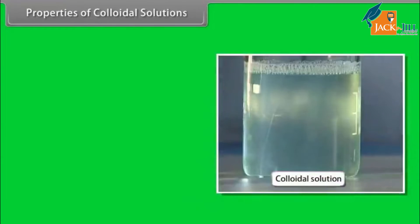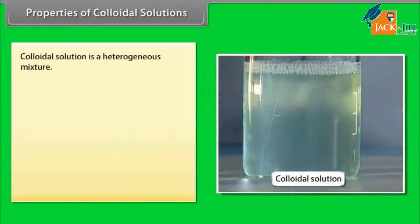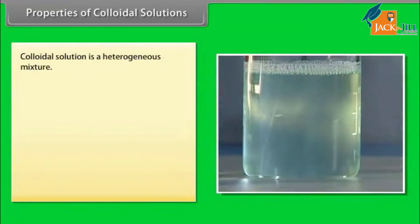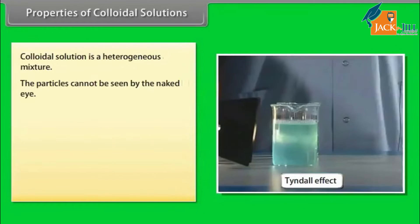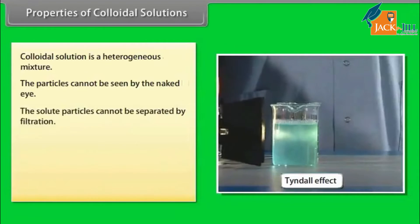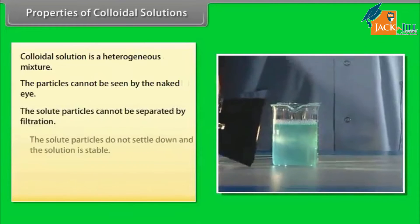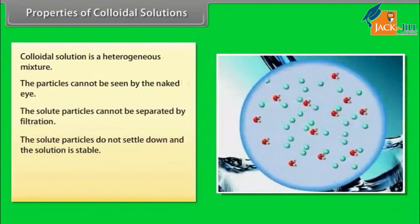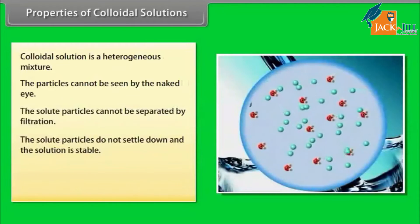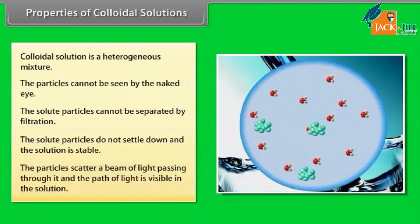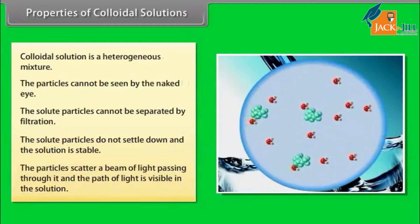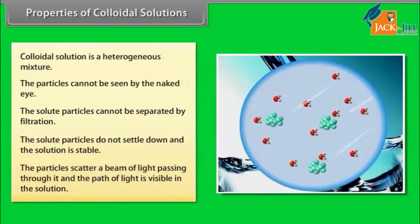Properties of colloidal solutions: A colloidal solution is a heterogeneous mixture. The particles cannot be seen by the naked eye. The solute particles cannot be separated by filtration. The solute particles do not settle down and the solution is stable. The particles scatter a beam of light passing through the solution and the path of light is visible.